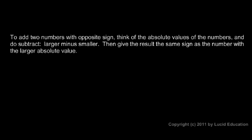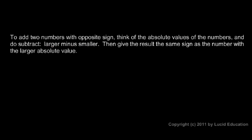To add two numbers with opposite sign, you think of the absolute values of the numbers and you subtract the larger minus the smaller. So you subtract and you get a result, a number. And then you give the result the same sign as the number with the larger absolute value.